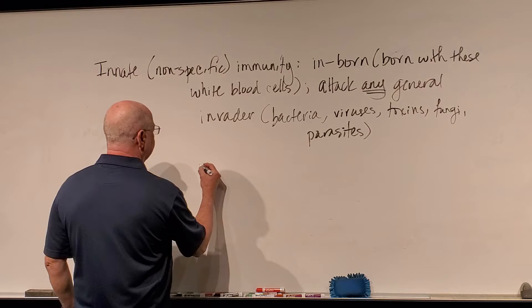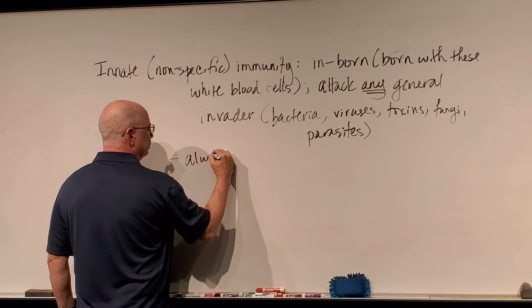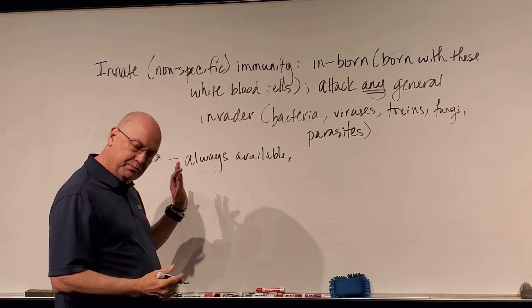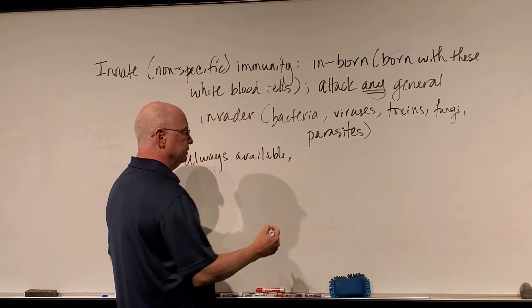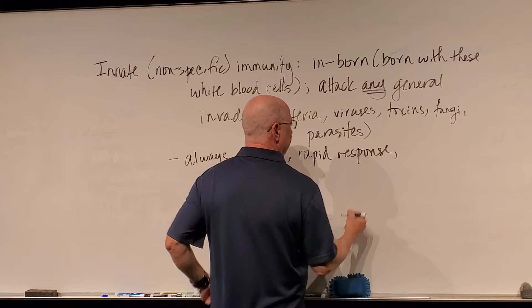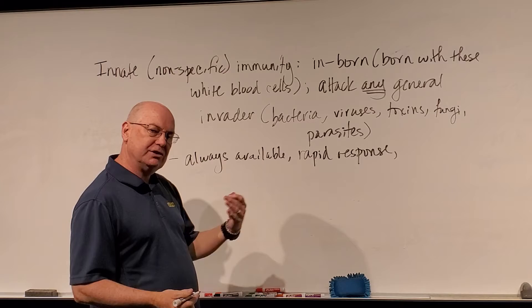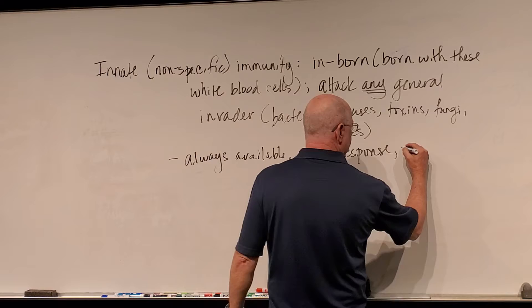A few details about the innate immune system. It is always available to us — from the time we're born until we die, unless you have some disease or disorder of the immune system. It provides a rapid response: as soon as the white blood cells recognize a foreign invader, they go into action and attack it, setting off a whole series of reactions to try to fight off this infectious agent.